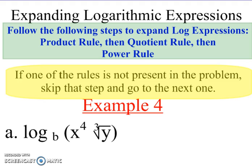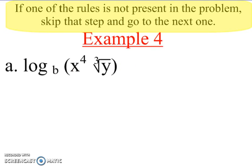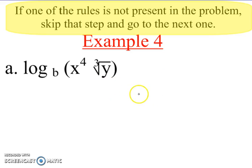Now for example A, we have log base B of X to the fourth times the cube root of Y. Everything inside gets a log, so each variable gets a log. We look at this and say: our product rule is the first thing we have to do, because that's our first step.